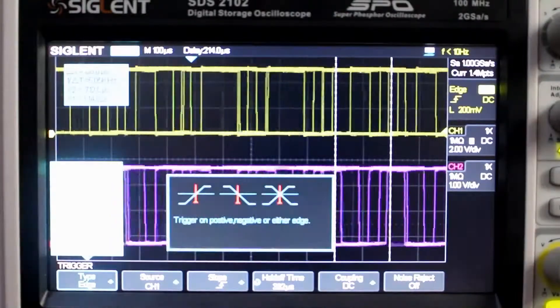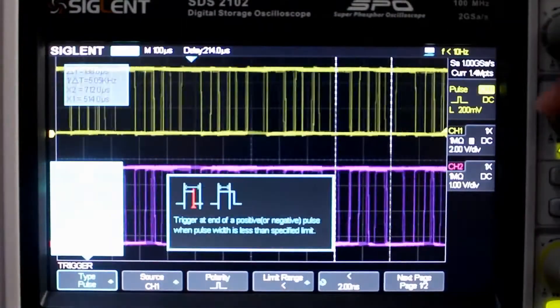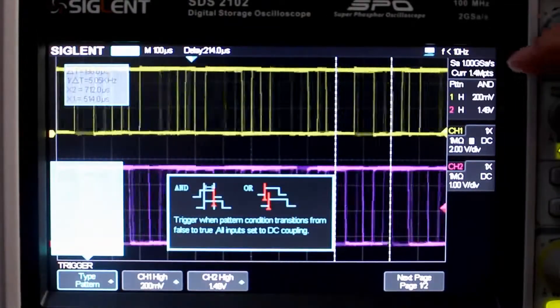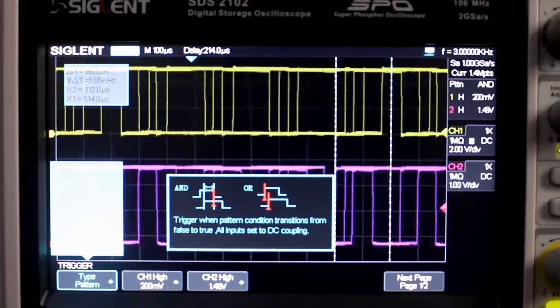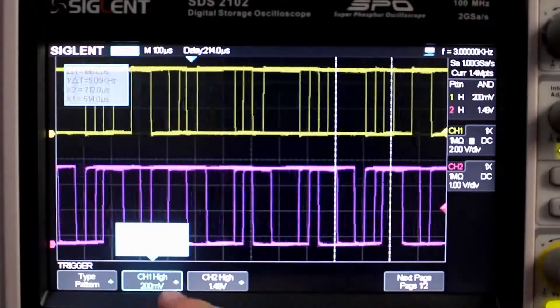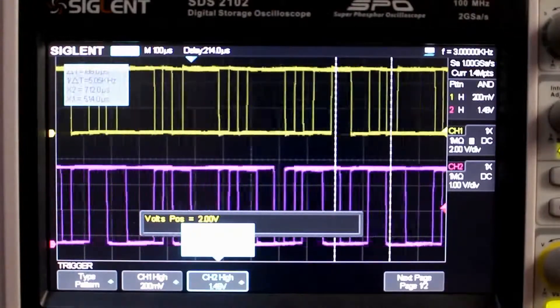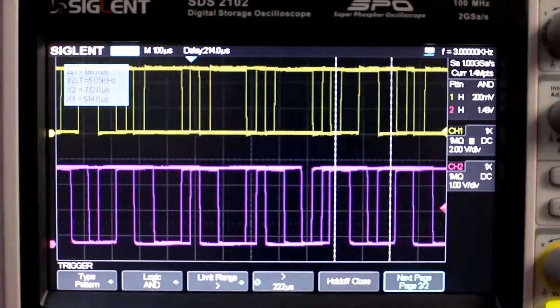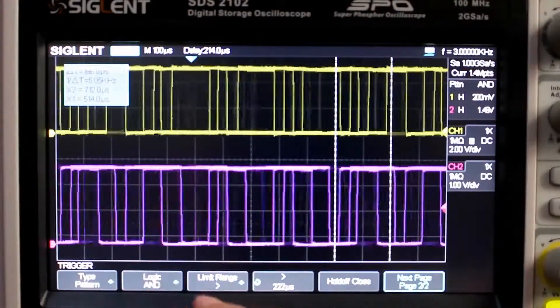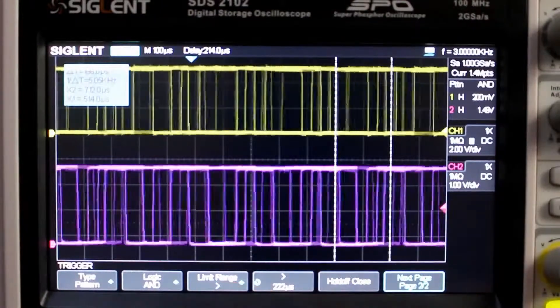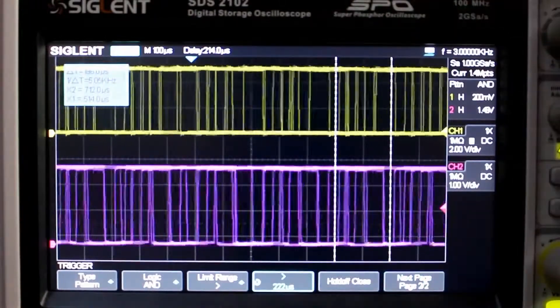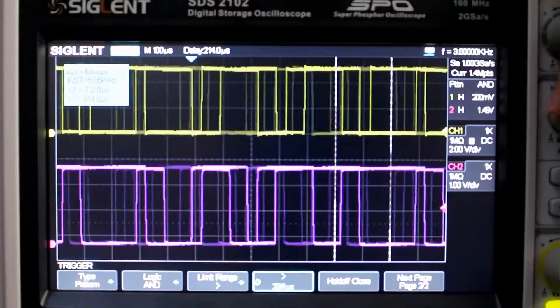So let's go to our pattern trigger type. Okay, good. Channel one, set it to high. Channel two, set it to high. The logic AND, good. The limit range greater than, so that means we need to be greater than 100 if we want it triggered at the wider true result.